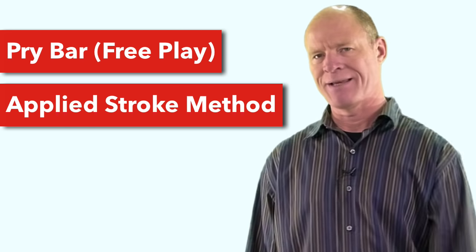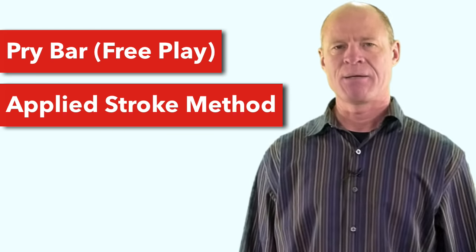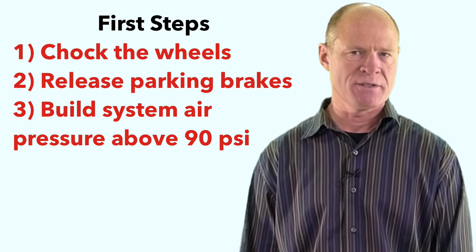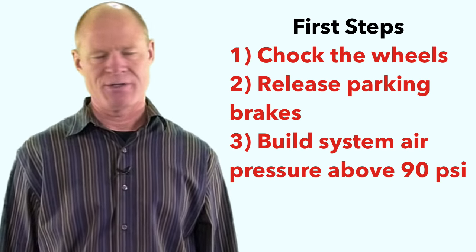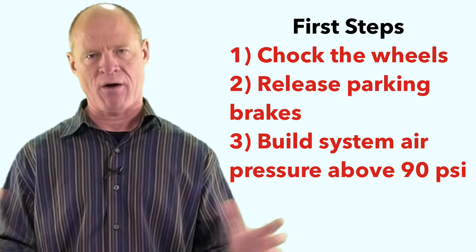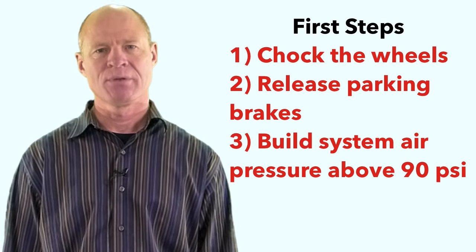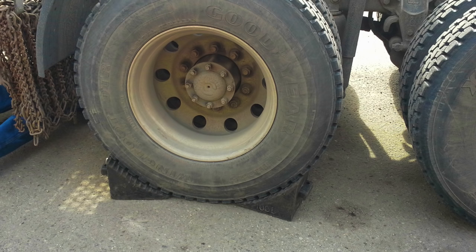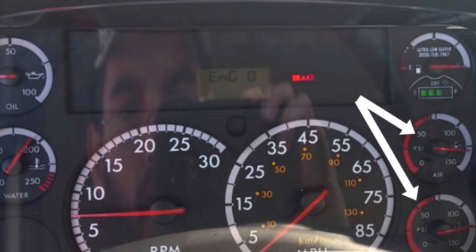Safety first. On both of these methods, regardless of which one you're using, the first steps are to chalk the wheels on your vehicle, release the parking brakes, and ensure that the pressure in the system is above 90 pounds. You need more than 90 pounds in the system to have those powerful spring brakes completely released. Chalk the wheels as you can see here in the image. Get in the cab, release the parking brakes, put your foot over the service brake just in case the chocks don't hold and the vehicle begins to roll away. Then ensure you have more than 90 PSI in the system.